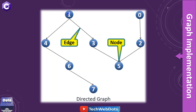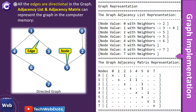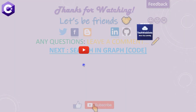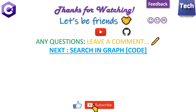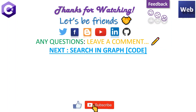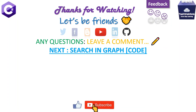Looking back at the graph, from 1 we can go to 3 and also to 4. This was a simple implementation showing that all edges are directional, and both adjacency list and adjacency matrix can represent a graph in computer memory. I hope you liked this video — please drop any comments or suggestions below, and I will see you in the next video where I'll show how to search in this graph using a simple coding example.